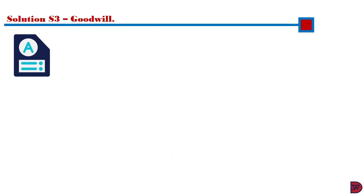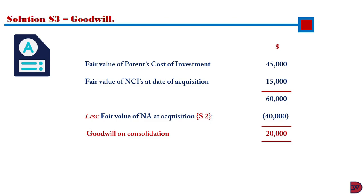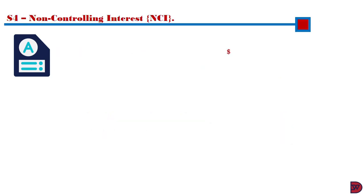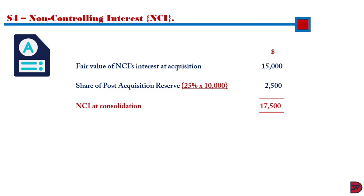In step 3, goodwill: the fair value of the parent's cost of investment is $45,000, plus the fair value of the non-controlling interest of $15,000, giving a total of $60,000. We deduct the fair value of net assets at acquisition — the left column of step 2 was $40,000 — so goodwill on consolidation is $20,000. In step 4, non-controlling interest: fair value at acquisition is $15,000, plus its share of post-acquisition reserve — 25% multiplied by $10,000 — giving $2,500. Non-controlling interest on consolidation is $17,500.